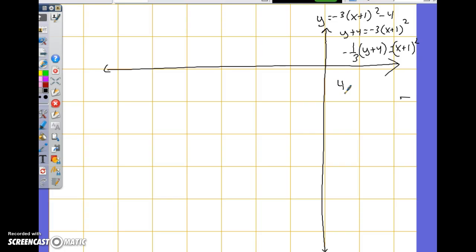4, eww. So 1 twelfth? 1 twelfth. Negative. Negative 1 twelfth is P. Yeah. Let's go.